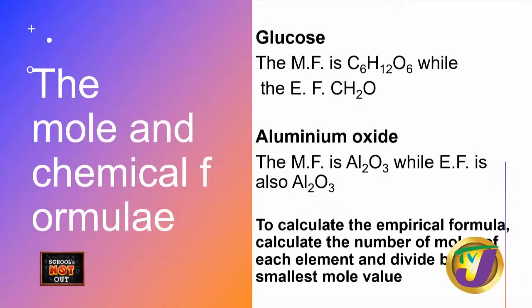For example, glucose has the molecular formula C₆H₁₂O₆ — even people who don't do science know this. But the empirical formula for glucose is CH₂O. We get this because all the subscript numbers in C₆H₁₂O₆ are divisible by 6: 6÷6=1, 12÷6=2, 6÷6=1. So the empirical formula simplifies down to CH₂O.